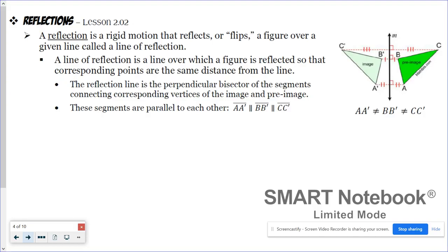The diagram shows that perpendicular relationship with the right angle box, and it shows that the distance C prime is from the line of reflection equals the distance C is from the line of reflection. All of those connecting segments are also parallel to each other.